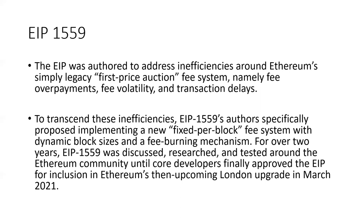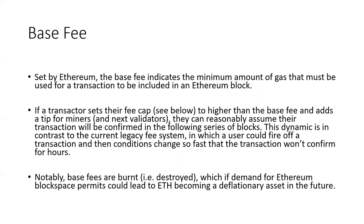EIP-1559 was discussed, researched, and tested for several years until it was finally included in the London upgrade in 2021. Basically, now we have a base fee for a block, and this base fee is set by the protocol and indicates the minimum amount of gas that must be used for a transaction to be included in an Ethereum block. If a transactor sets their fee cap higher than the base fee and adds a tip for miners and validators, the person submitting the transaction can reasonably assume their transaction will be confirmed in the following series of blocks. This is in contrast to the legacy fee system, in which a user could fire off a transaction and conditions could change so that the transaction wouldn't confirm for hours.